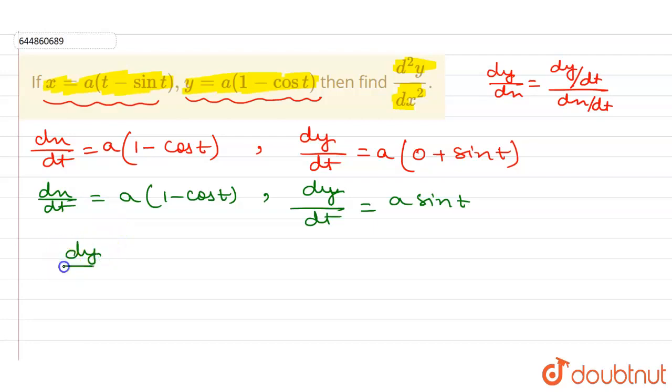So dy/dx can be written as dy/dt divided by dx/dt. So dy/dt is a sin t, and dx/dt is a times 1 minus cos t.